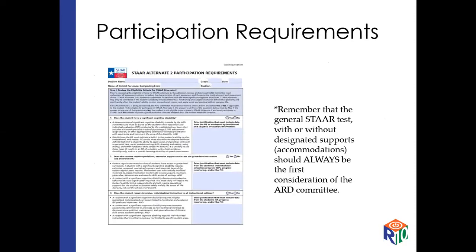This is the new form — it actually became available last spring, late spring. The questions didn't change. What did change is how they helped us to understand the meaning behind the questions, and they really clarified a lot. Our first consideration as an ARD committee is always the general STAR test with or without designated supports or what we typically call accommodations. That should always be the first thing we think of. If not, then we begin to look at the STAR Alternate 2 participation requirements to see if the student does indeed meet that.